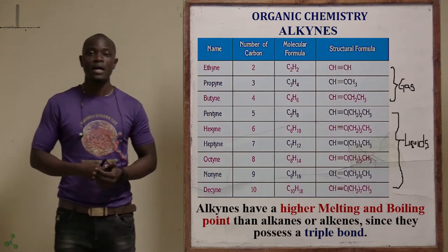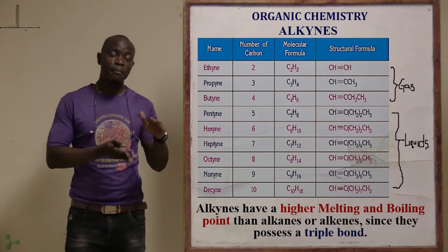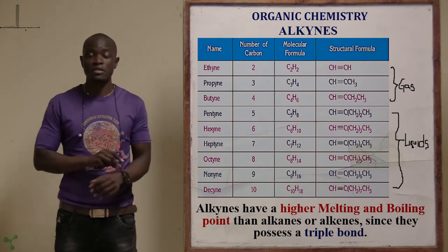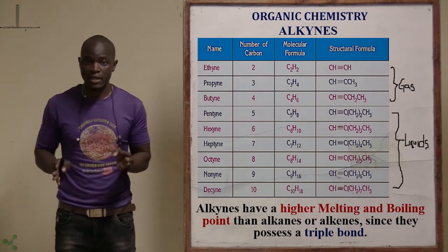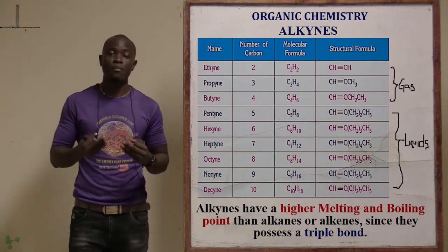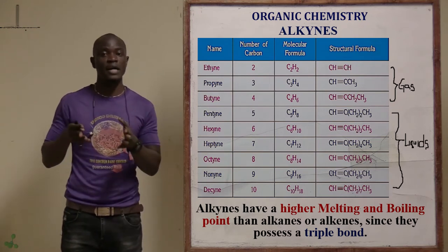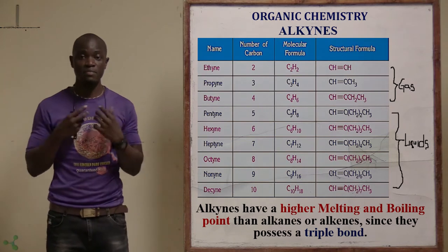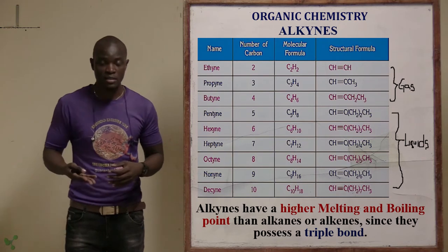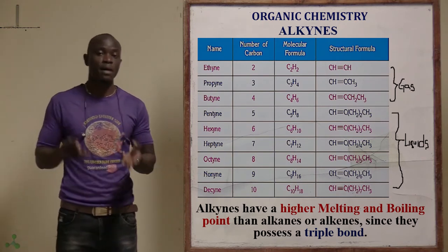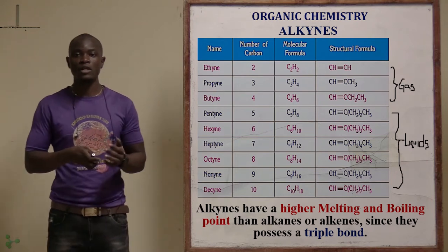Alkynes with a lower number of carbon atoms — such as ethyne, propyne, and butyne — are basically gases. As the number of carbon atoms increases, the viscosity of the alkynes increases. As viscosity increases, the flammability decreases.